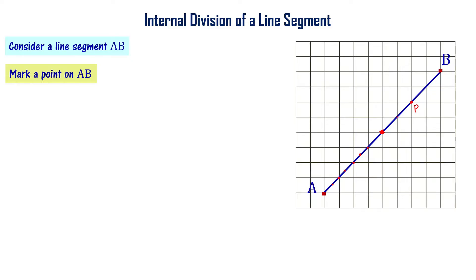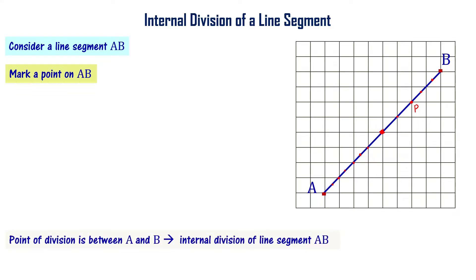That particular point is dividing line segment AB into two parts. We have seen that point of division — you call this as Q, you call this as R. These are points of division of line segment AB. The point of division is in between A and B.